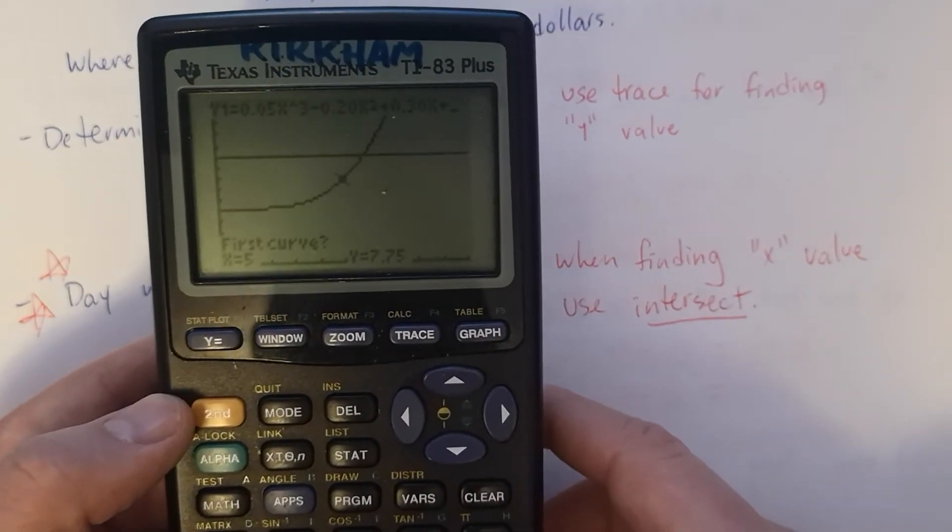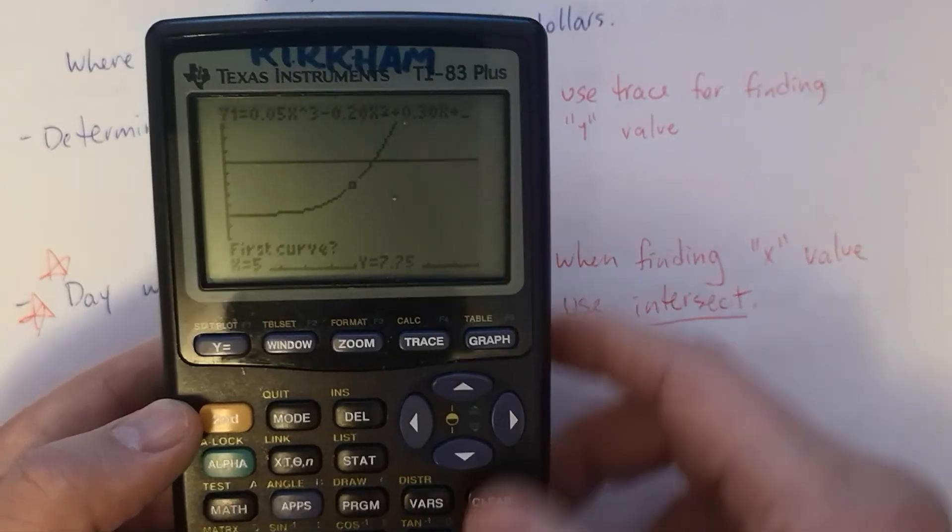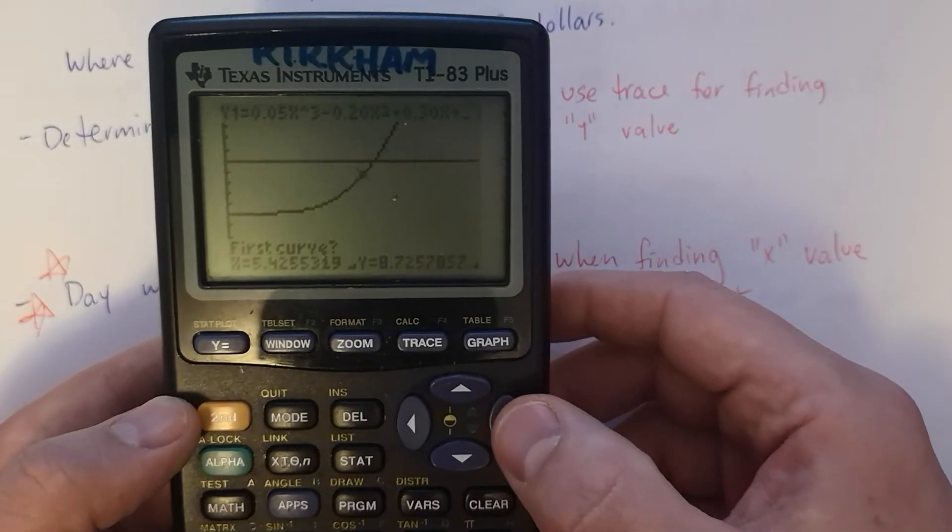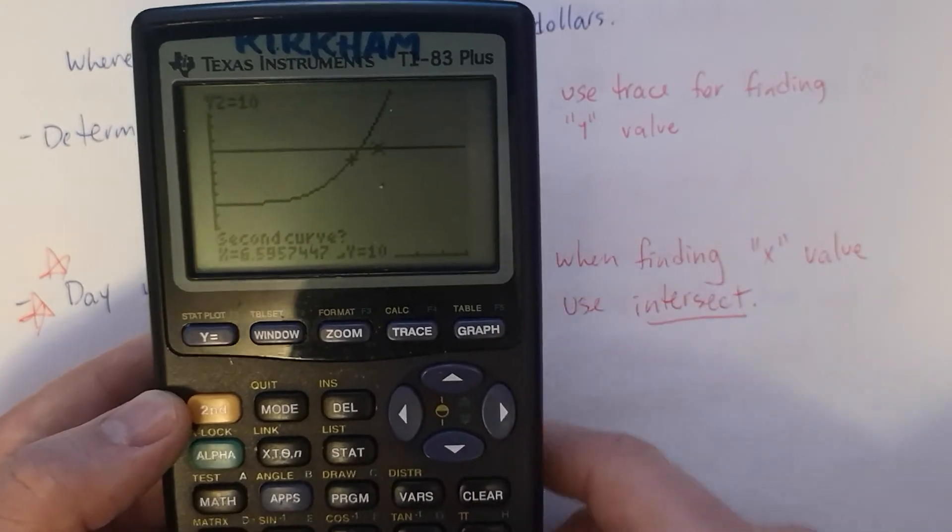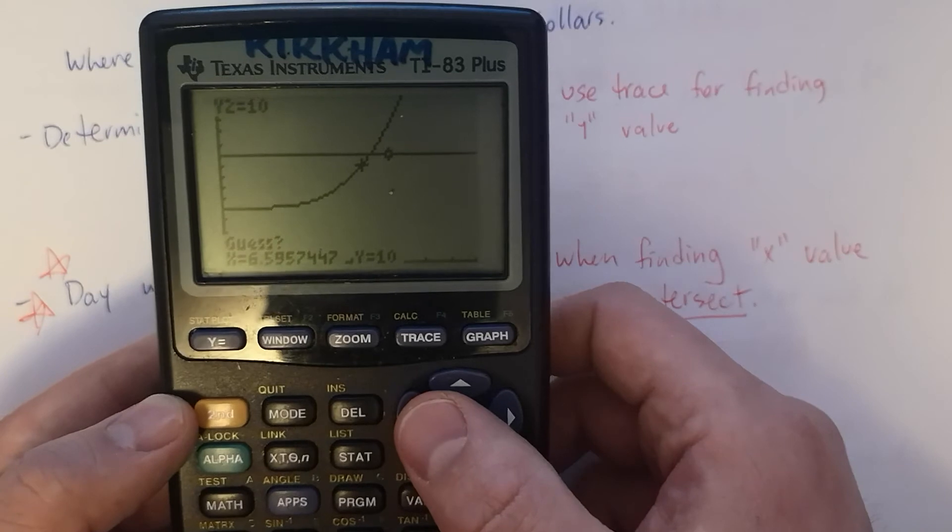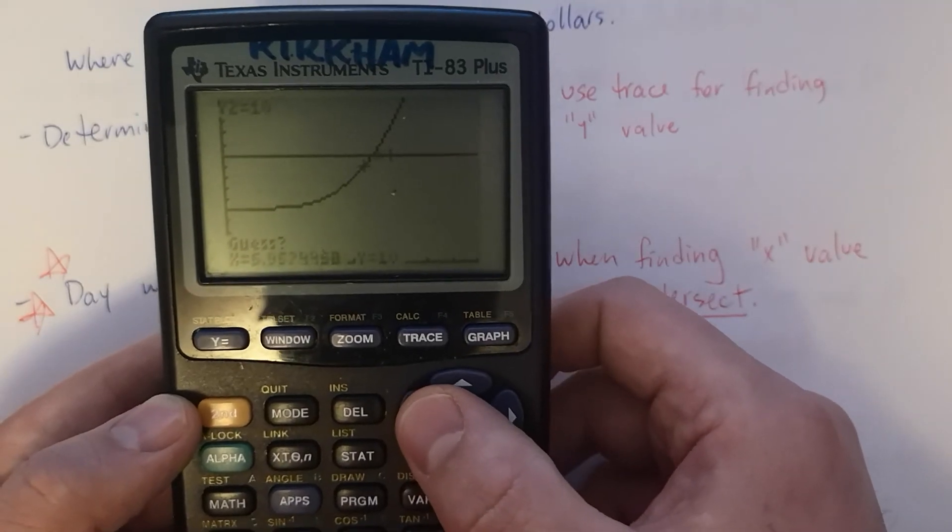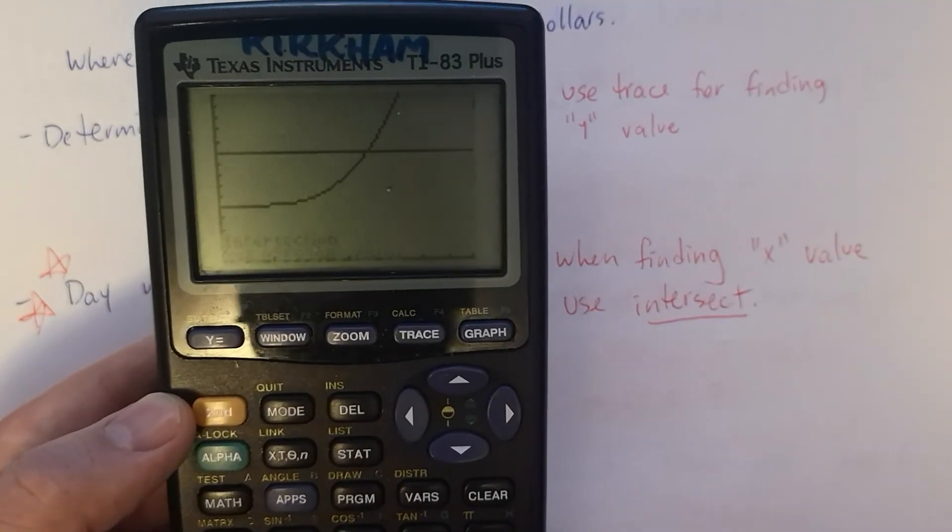Okay, choose that one. It says first curve. Again, you can move that cursor around. Some people like to move it close. It doesn't really matter unless there's more than one intersection. Second curve, I put it over there. Guess. You need to enter again, or you can move it close to where they intersect. Let's see what we get.